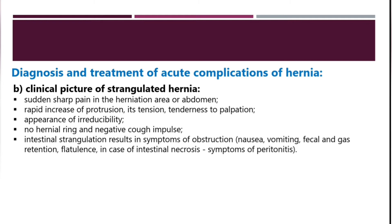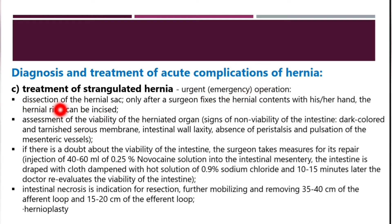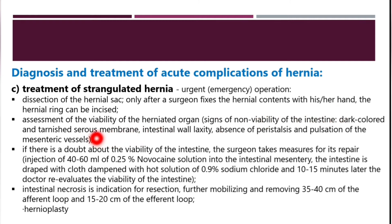Treatment of strangulated hernia is a surgical emergency. Dissection of the hernia sac is performed only after the surgeon fixes the hernia contents with a finger, then the hernia ring is incised. After incision, viability of the organs is assessed. Signs of non-viability include dark coloration, the intestine being tarnished and not shiny, intestinal wall laxity, absence of peristalsis, and poor pulsation of mesenteric vessels.